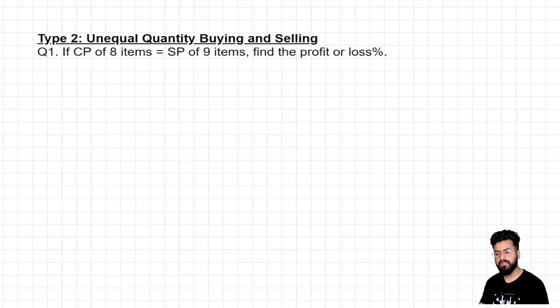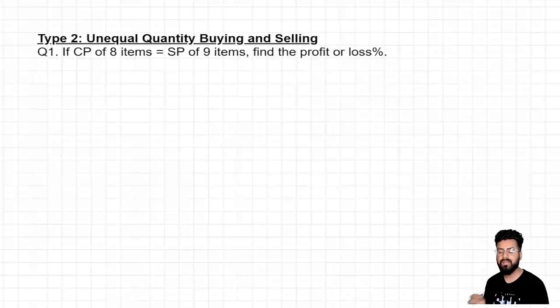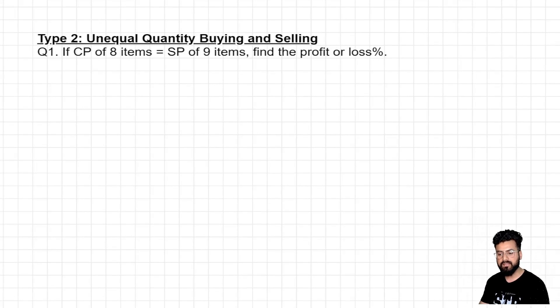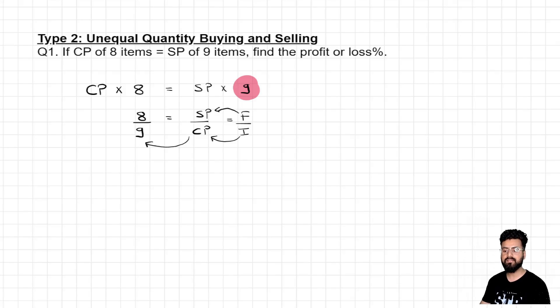And to understand this let us discuss the first question. If cost price of 8 items equals to selling price of 9, find the profit or loss percent. Now to do this calculation you know I can very easily write down the same expression in mathematical form. I can write this as cost price of 8 items is equals to selling price of 9 items. Now what I want, I want you to maintain this form SP upon CP. Try to maintain the ratio in this form selling price upon cost price. In order to do this I'll just keep 8 in the same side and now I'll bring this 9 to the other side. If I do so 9 will come in denominator.